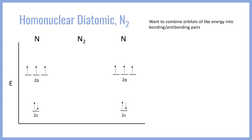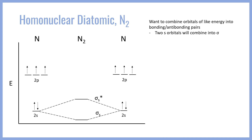To start off, let's combine the two s orbitals on each nitrogen. The s orbitals will combine into a sigma and a sigma star molecular orbital. Then the electrons from the s orbitals will start to fill in those molecular orbitals. Because there are four electrons in the original atomic orbitals and four available spots in these molecular orbitals, they will fill in both the bonding orbital and the antibonding orbital as well.